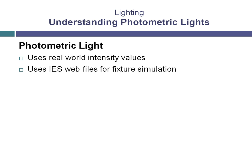Photometric lights are also able to use something called a photometric web or IES data file in order to simulate a physical light fixture. These files describe the distribution pattern of the light and provide a way of creating highly realistic lighting setups. This pattern is also dependent on real world scale.